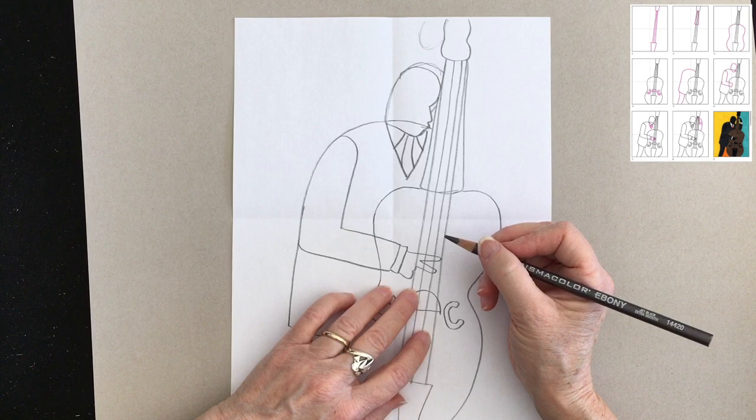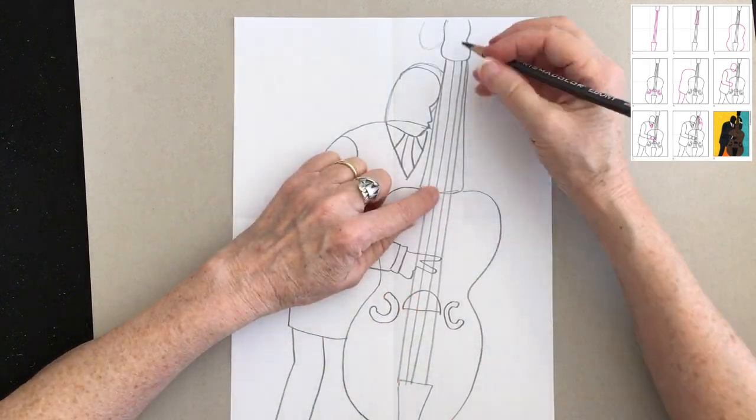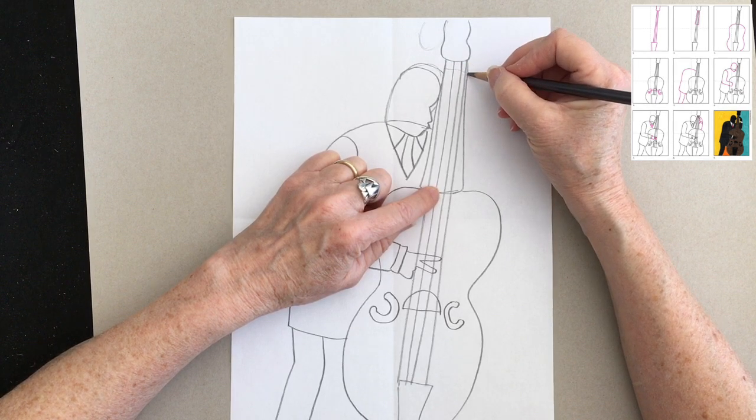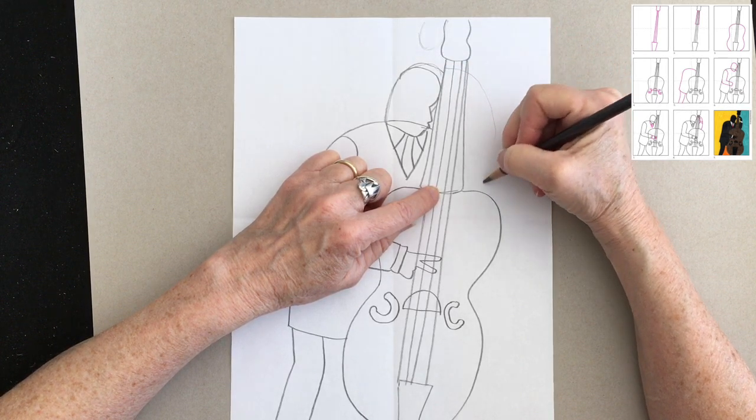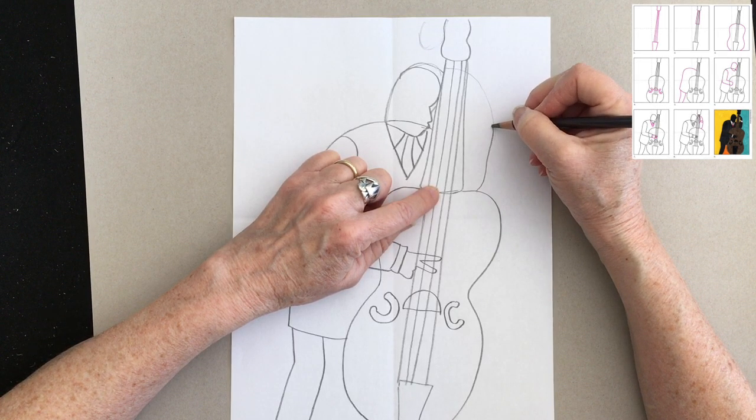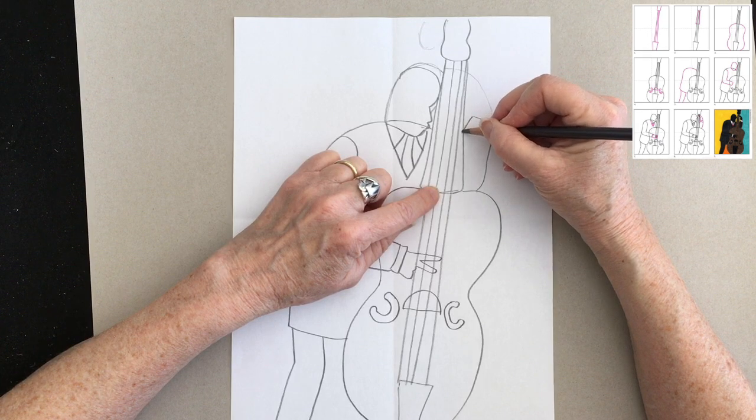Hmm, looks a little small. But I'm going to keep going. There's another hand up here, and this hand just looks like a great big swoop. And I'm going to lightly put in that swoop, and then I'll go back and darken in the parts of it that I like.